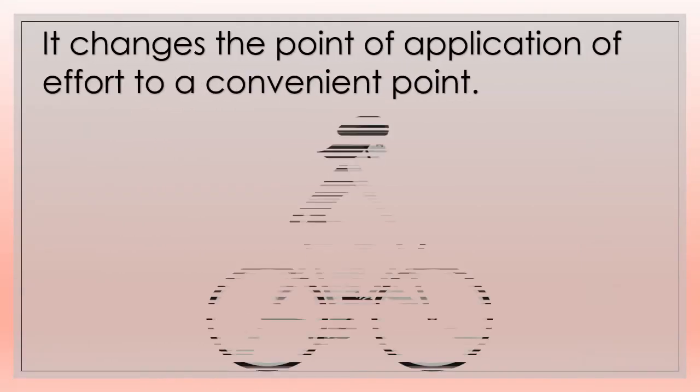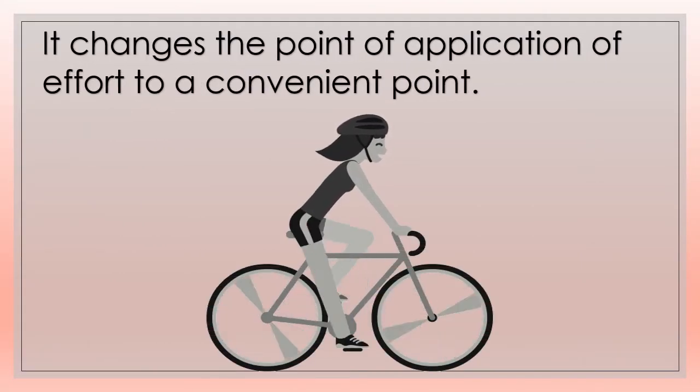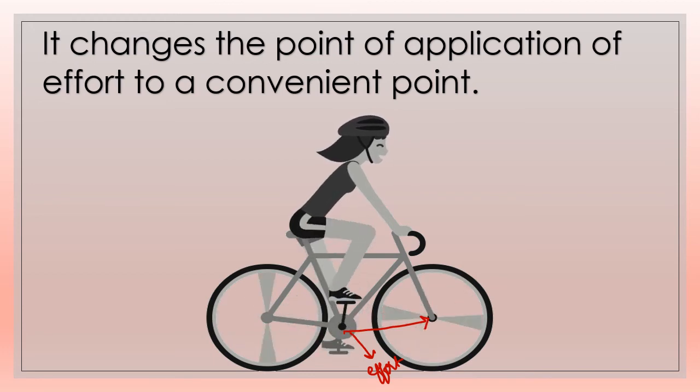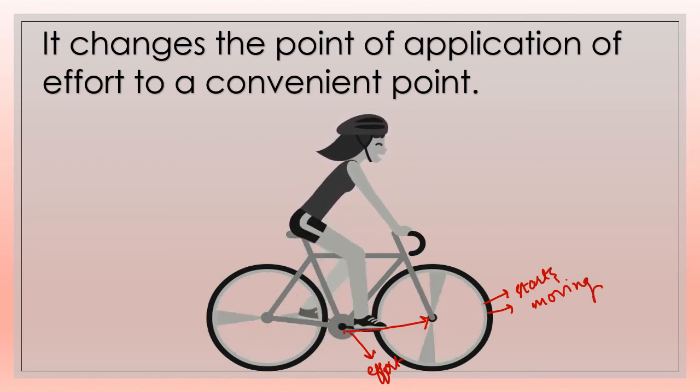When we ride a bicycle, we apply effort on the pedals. This effort is then transferred to the front wheel which is attached with the pedal of the bicycle by a chain and thus, the wheel starts moving forward. Therefore, by using a machine, the point of application of effort can be changed to a convenient point.